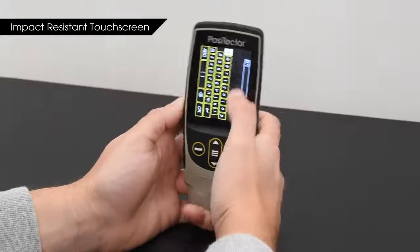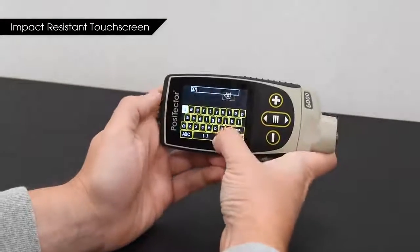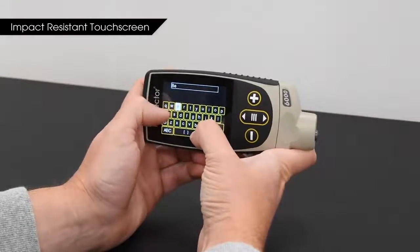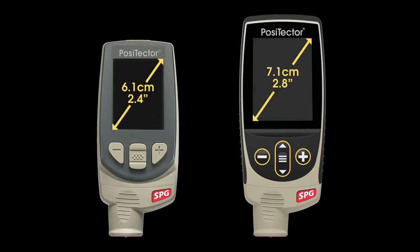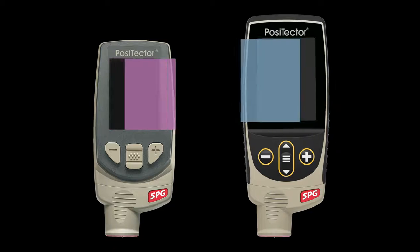The new impact-resistant touch screen makes navigating through menus, entering notes, and renaming batches easier than ever. At 2.8 inches, the screen is 35% larger for even better readability in any condition.